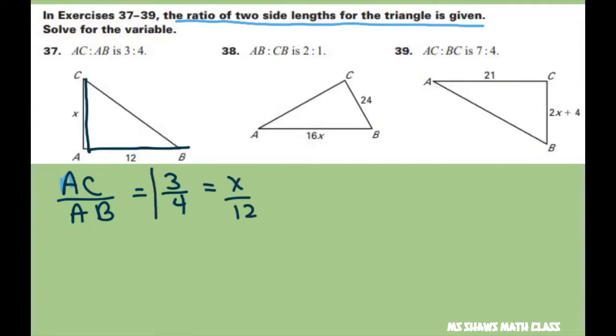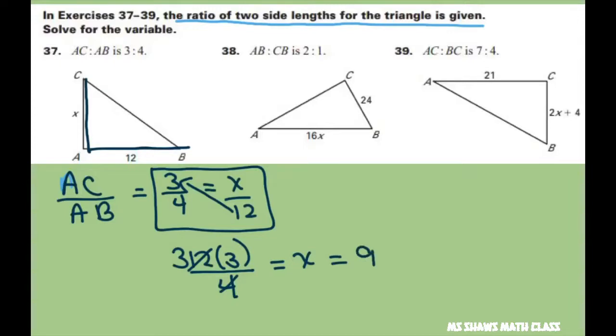So I'm going to be looking at this and you cross multiply. I'm just going to move the 12 up here. So you get 12 times 3 divided by 4 equals X. So 4 goes into 12 three times. So 3 times 3 is 9. So X is 9.